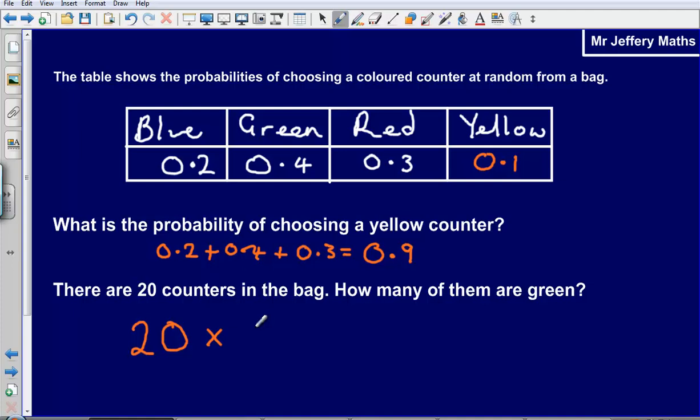So 20 multiplied by 0.4, that's going to give us an answer of 8. So how many of them are green? Our answer there would be 8.